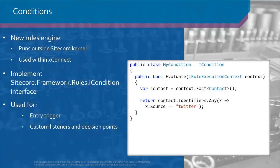On the right side of this slide you can see an example of a very simple condition. We have the rule execution context, which is injected — this is the context under which your rule is running. This context allows you to extract certain facts about the execution, and these facts are pieces of information that the host will inject for you, such as a contact, as shown in this case.